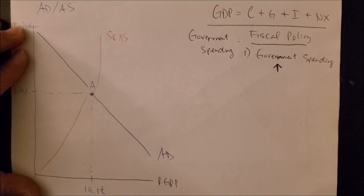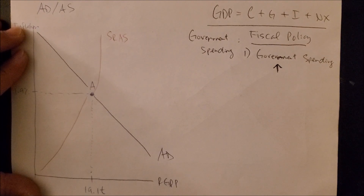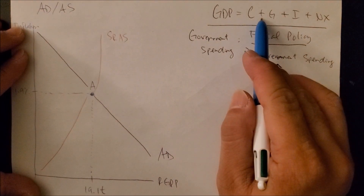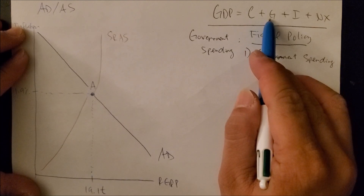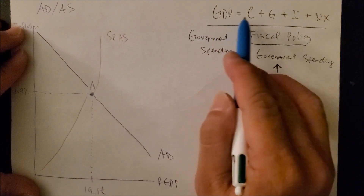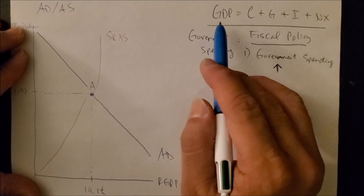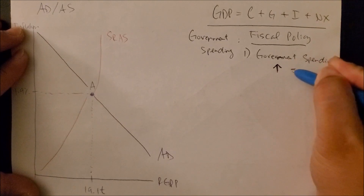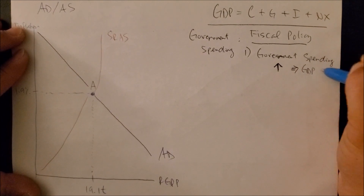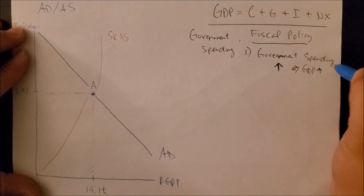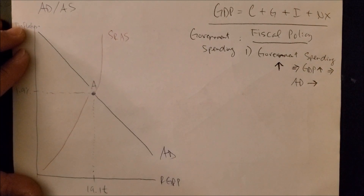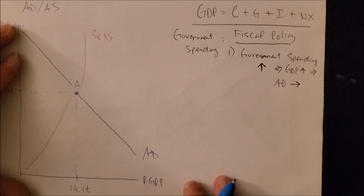An increase in government spending can also be called expansionary fiscal policy. There is a positive value in front of G, meaning G and GDP are directly related — both will increase together. So as government spending increases, this in turn increases the GDP of the economy, which shifts the AD curve to the right.